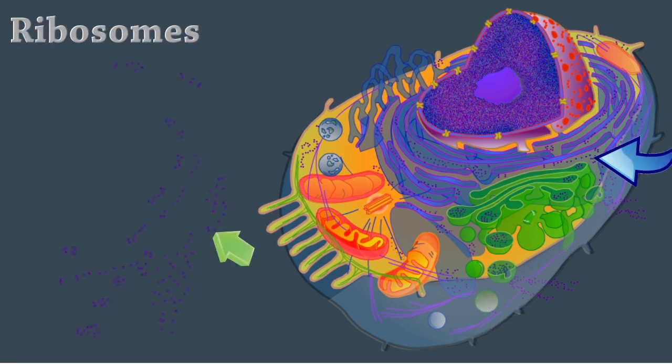Ribosomes are dense particles that consist of two subunits, each of which is composed of ribosomal RNA and protein. They may be free or attached to the rough endoplasmic reticulum. This is where protein synthesis takes place.